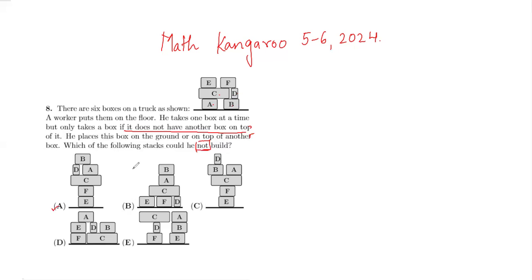Let's see whether A is possible. First he'll take E and put it at the bottom, then F, then C is free, then he'll pick up D, then A and B are free. So this is possible, hence not my answer because the question is asking which he cannot build.